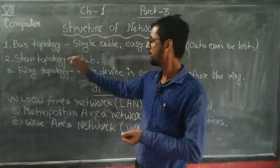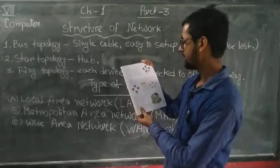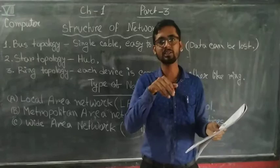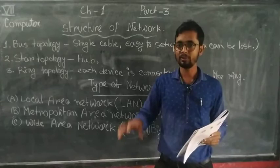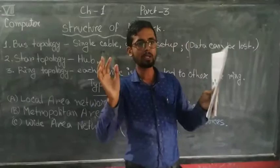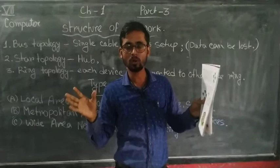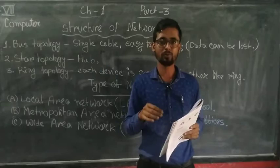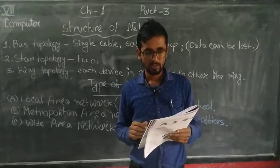Now let us come to star topology — page number 5. In star topology, there is a main hub. All cable connections from the computers will connect to this hub, which acts as the main server. Whatever cables are there, all cables will directly connect to the hub and all computers will work through this hub. Whenever we need to share any data, this hub will help. The hub is the main device in a star topology network.